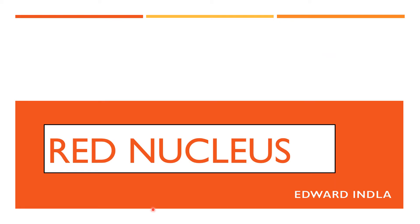Welcome to the channel. Today we are going to discuss a very small topic: the red nucleus. The red nucleus is a small amount of gray matter present in the midbrain — strictly speaking, at the rostral tegmentum of the midbrain. Here we can identify a cigar-shaped mass of gray matter which is called the red nucleus.